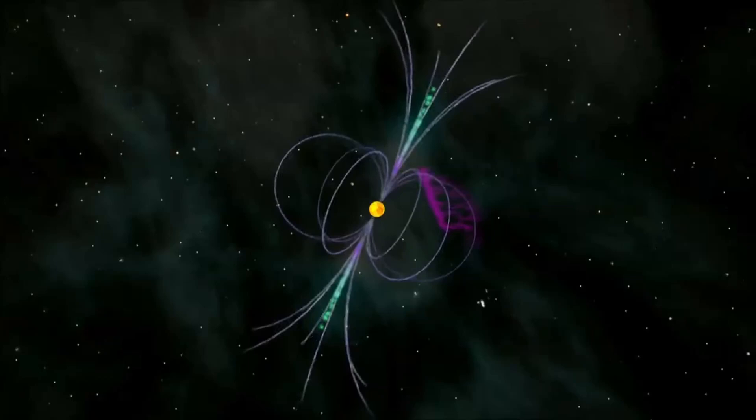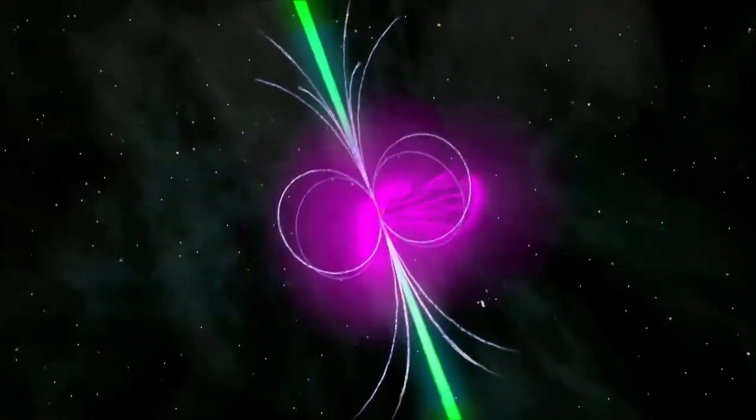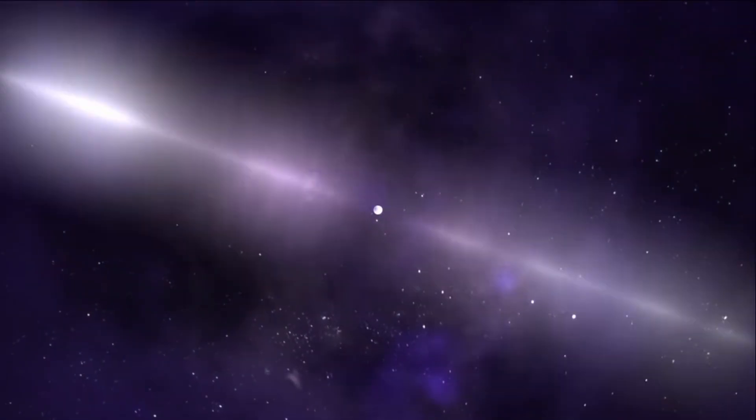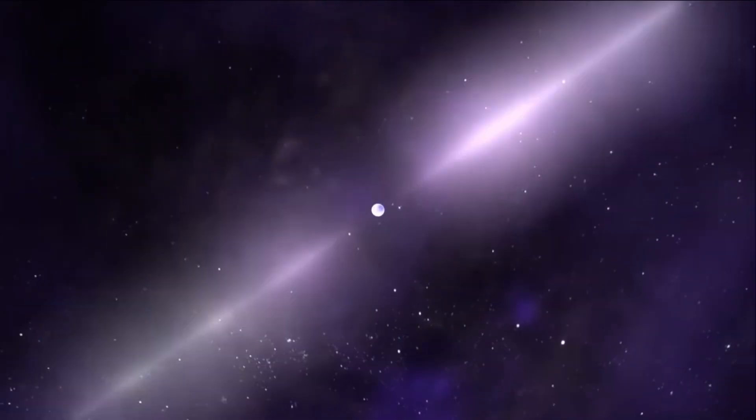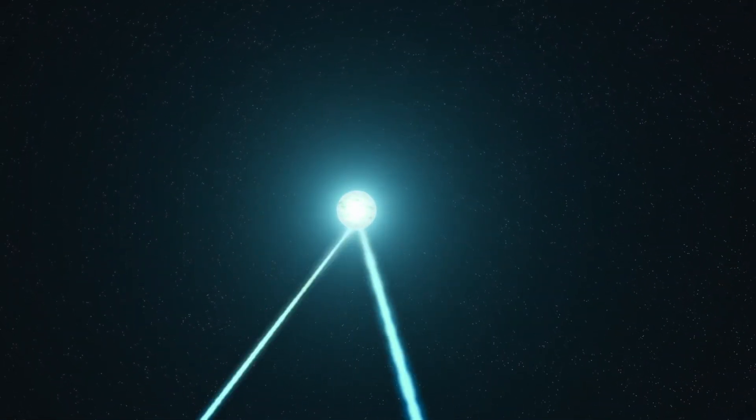Some neutron stars, known as pulsars, emit beams of radiation that sweep across space as the star rotates. These beams of radiation are detected as regular pulses on Earth and are incredibly regular, with some pulsars emitting pulses that are accurate to within a few microseconds. Some pulsars have been discovered that are more accurate at keeping time than our best atomic clocks.